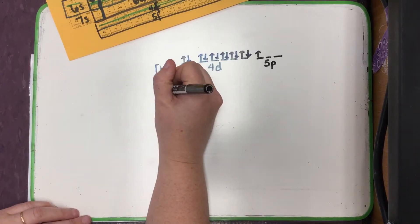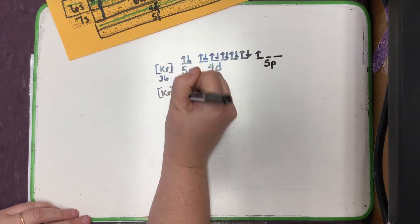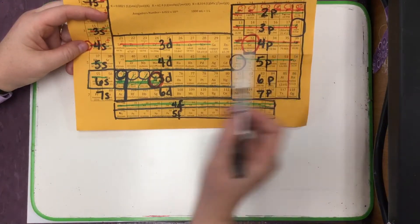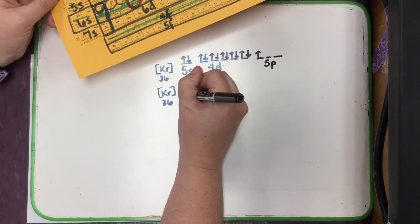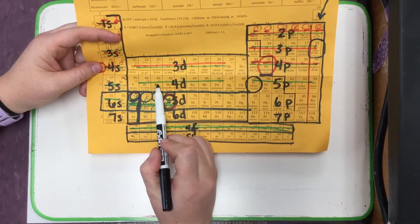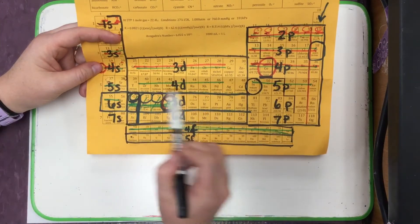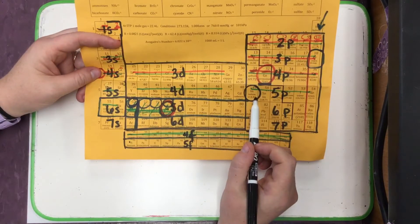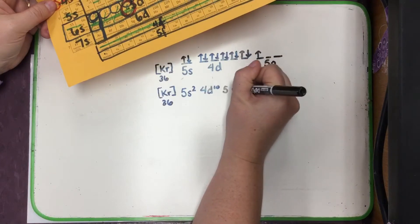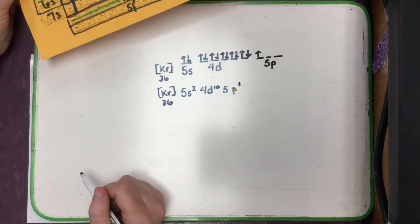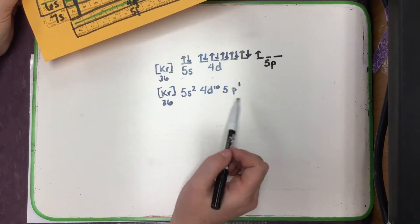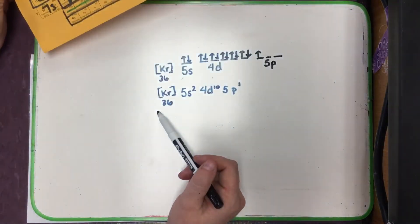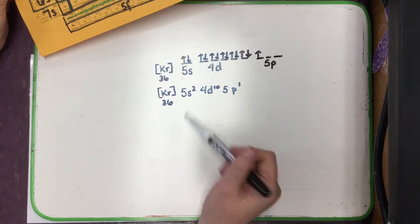We could also write out the shorthand electron configuration by simply replacing the arrows with exponents. So we start with [Kr] again. 37 and 38 — there are two elements in 5S. 39 through 48 — there are a total of 10 elements in 4D. And 49 — there's one single element in 5P. This is the shorthand electron configuration because it starts with the noble gas and uses exponents instead of arrows.